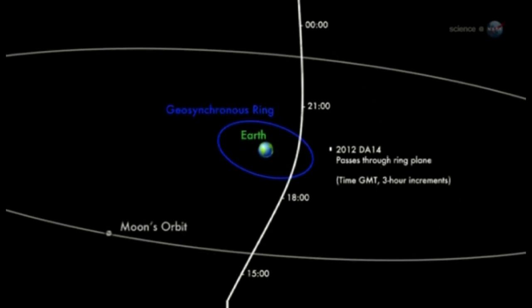The odds of an impact with a satellite are extremely remote, he says. Almost nothing orbits where DA14 will pass the Earth.